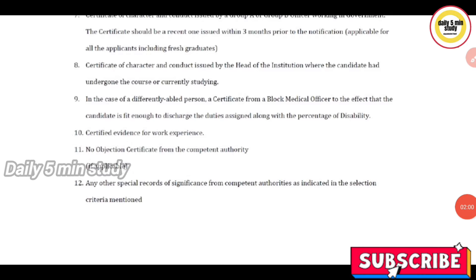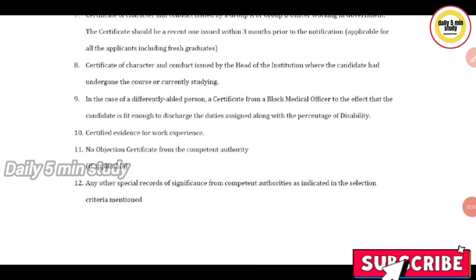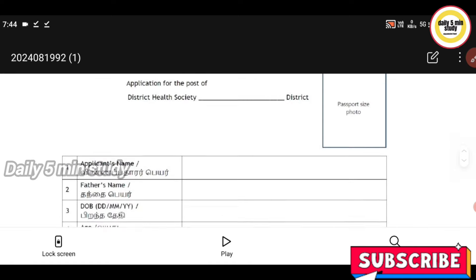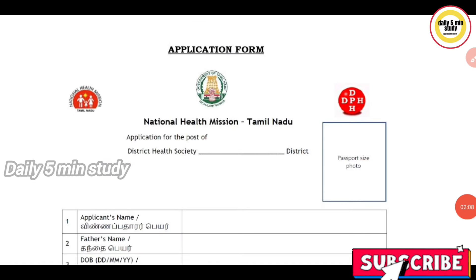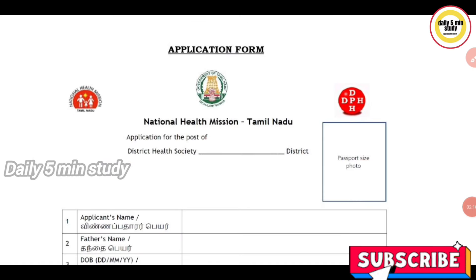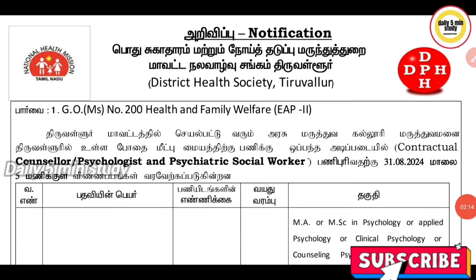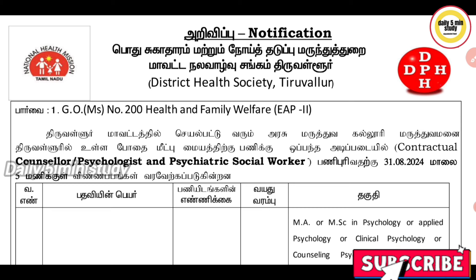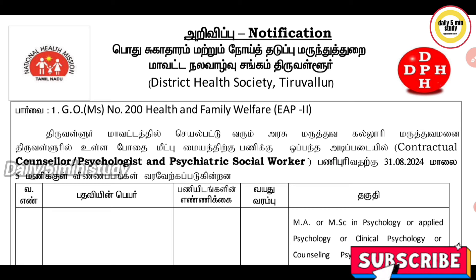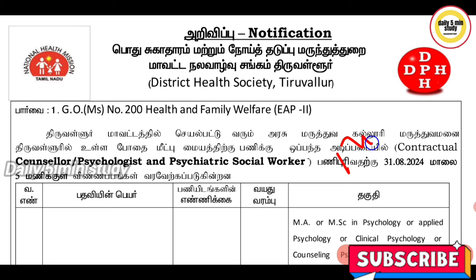If you have a self-attested application form, fill the application form. If you have an address, you will be able to enter the address. Enter your first name and district name. If you have a password, check your district name at nic.in.